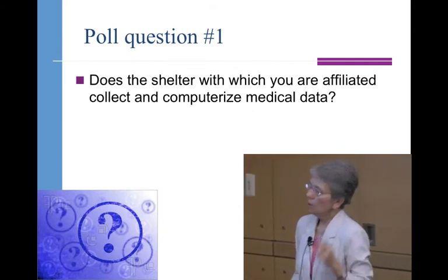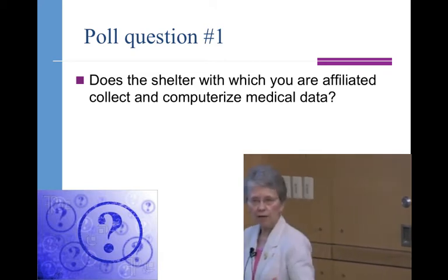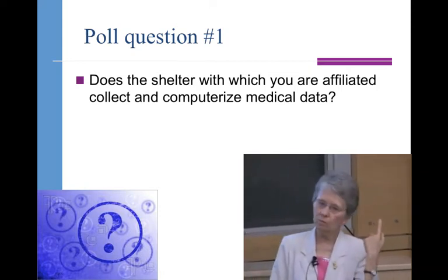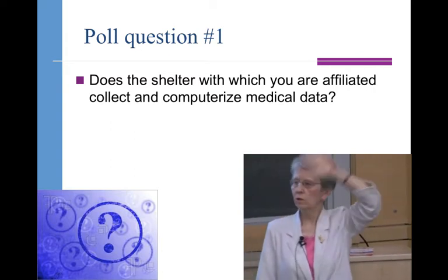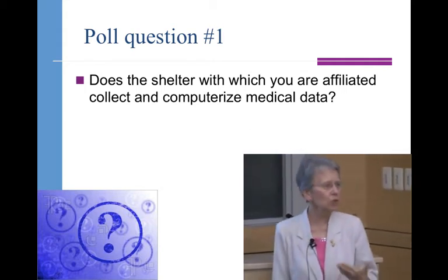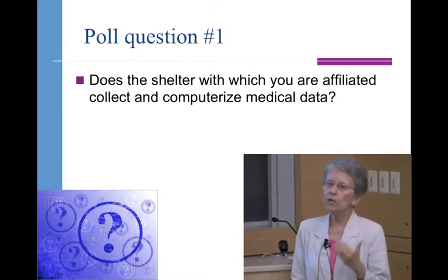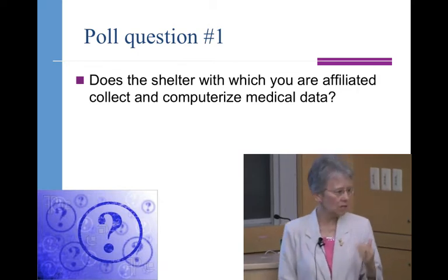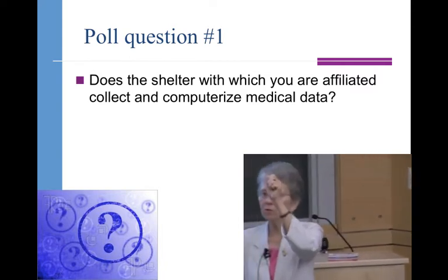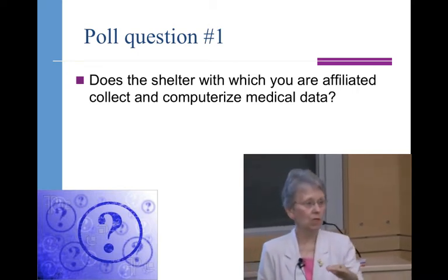So let's do a poll of hands. How many of you work in a shelter where you collect and computerize medical-related data — vaccination, antibiotic treatment, et cetera? Good. So most of you are working in a shelter where you're using some kind of a computerized system. Computerized systems should make your lives easier to do what I'm going to suggest. That said, even in shelters without a computerized system, there's no reason you can't keep track of the number of cats or dogs that develop particular illnesses you're really interested in addressing.